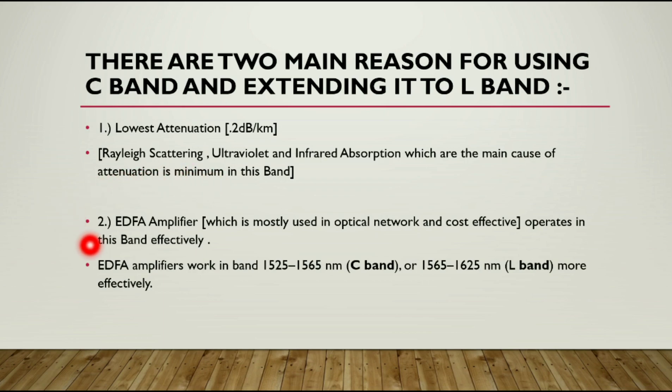Second is the EDF amplifier which is mostly used in optical networks and which is very cost effective. EDF amplifier works in these ranges very effectively. These are the two main reasons for which we are using the C band and L band for the DWDM system.